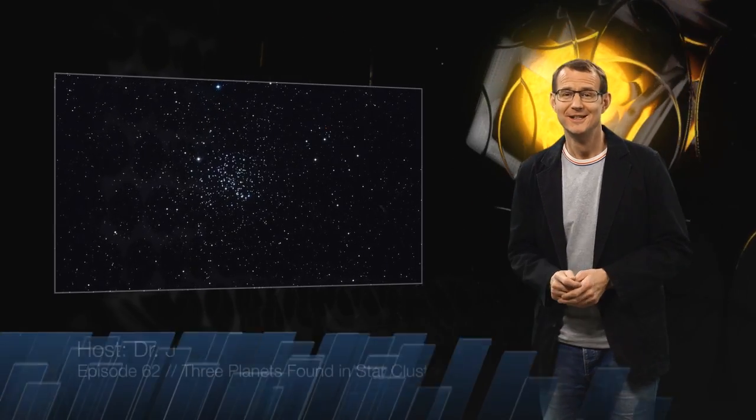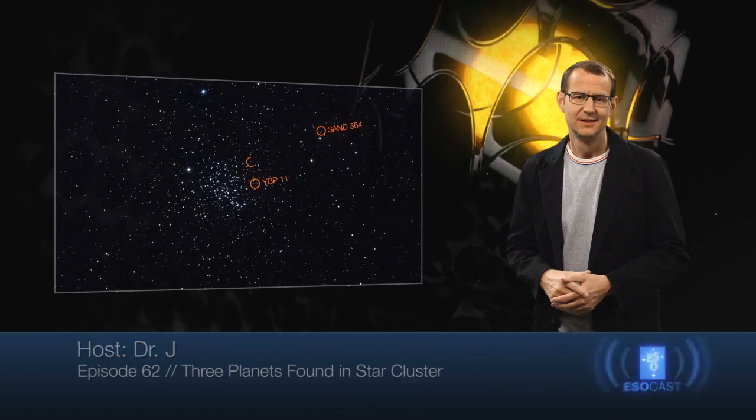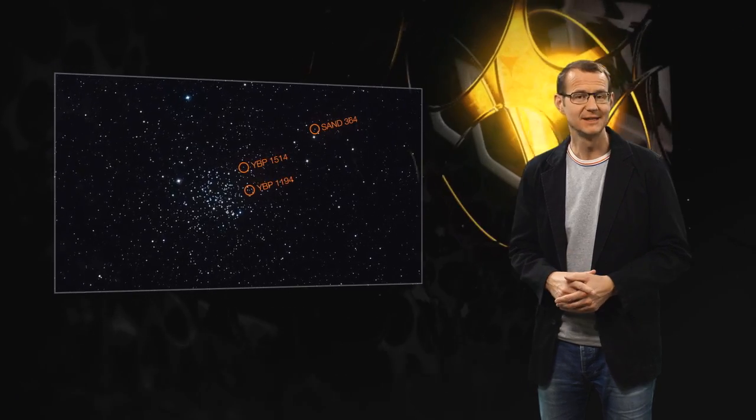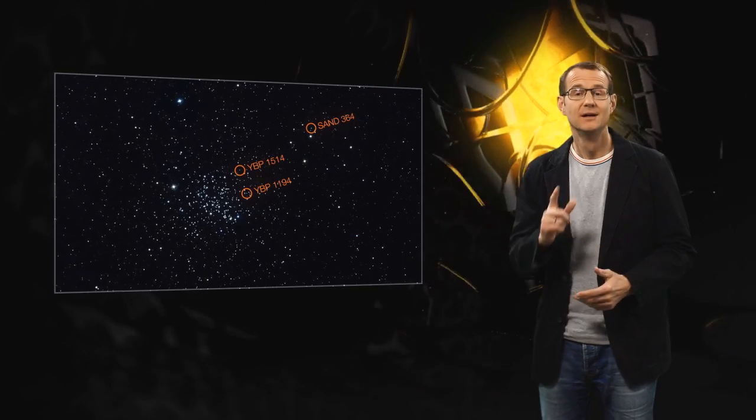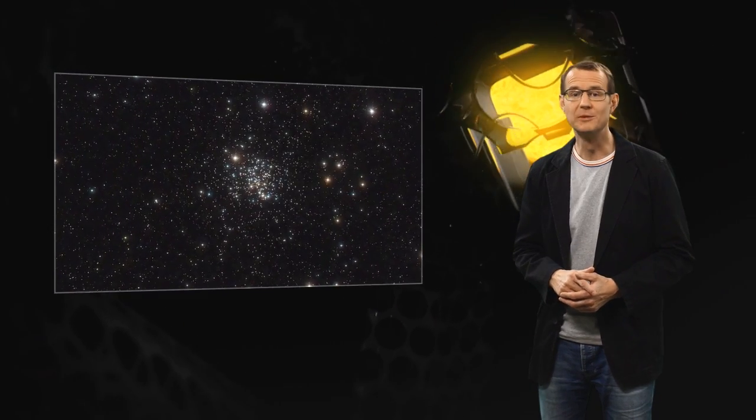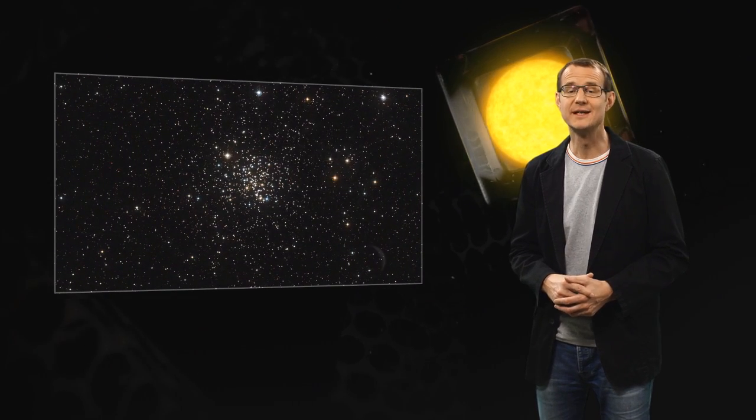Good news everyone! Three brand new exoplanets have been discovered. Considering that we already know about a thousand exoplanets, that might not sound like much. But this finding is in fact a little unusual, because these three planets orbit stars inside a cluster of stars known as Messier 67.